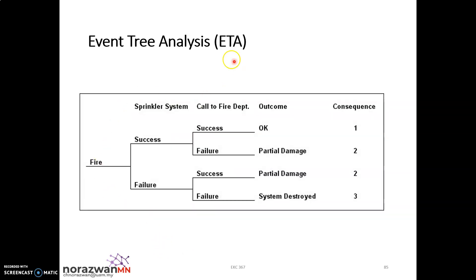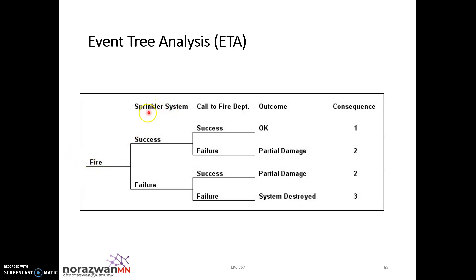For example, this is a simple event tree analysis. You have your initiating event — Fire. You have fire occurred. Then you have your safety systems for the fire hazard: you have your sprinkler system and also the fire department to put out the fire. So the first defense is the sprinkler system, and your second defense is calling the fire department.